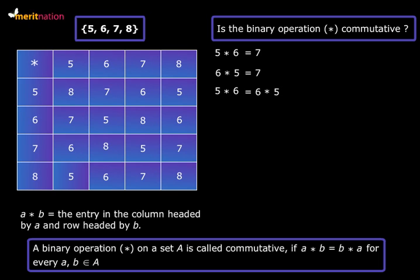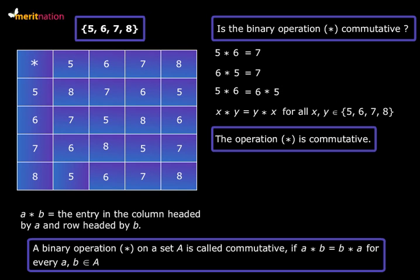In fact if you go on checking, you will find that this argument is true for all the elements of the set with us. What this means is x star y equals y star x for all x and y that belong to this set. So now we know that the operation star is commutative.